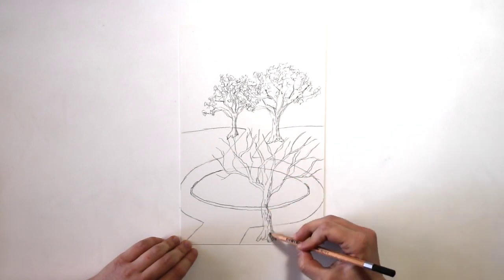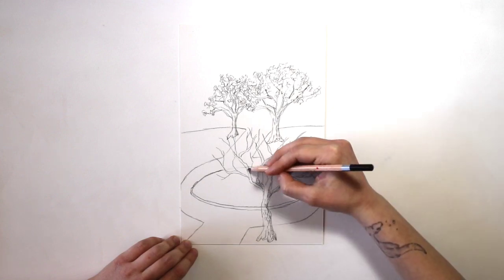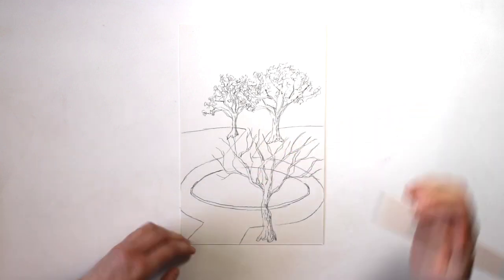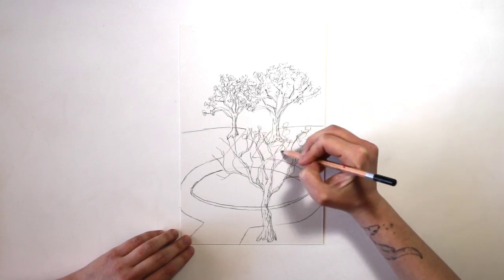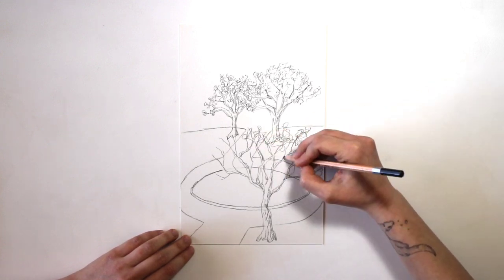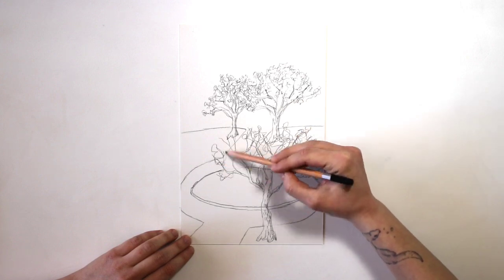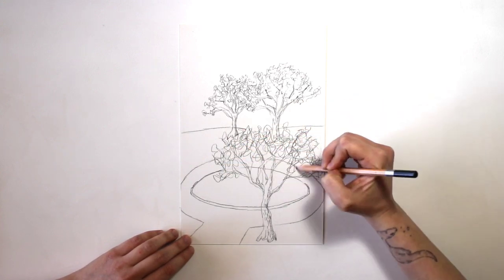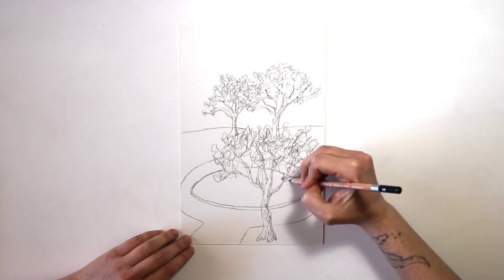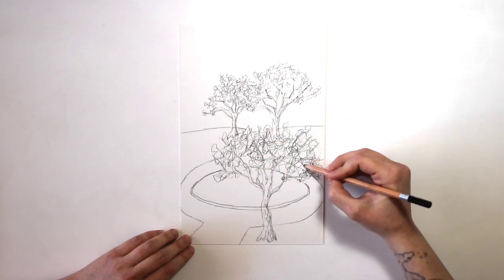Something I like to do while sketching is pay attention to where my highlights and shadows are. Right now, I can see that the sun outside is hitting the left-hand side of any surface, which means that the right-hand side is in shadow. You can show this by either pressing harder with your pencil while drawing on that side, or by going over that area more than once.